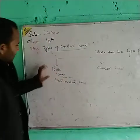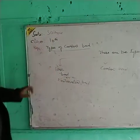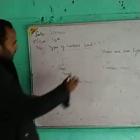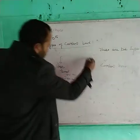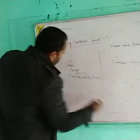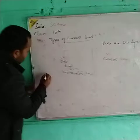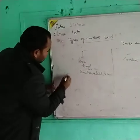What is an Ionic bond or Electrovalent bond? In this bond, transference of electrons takes place.